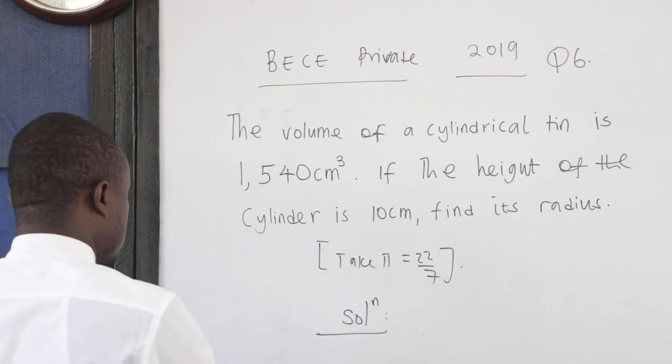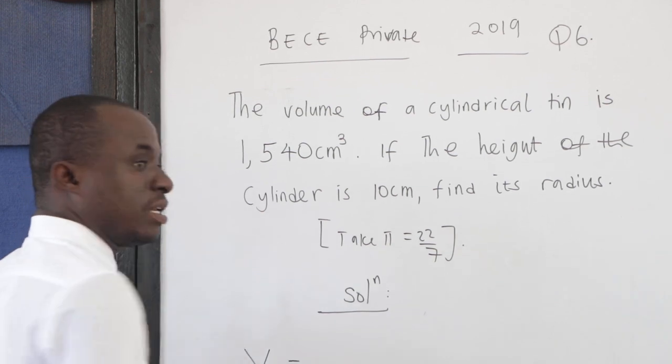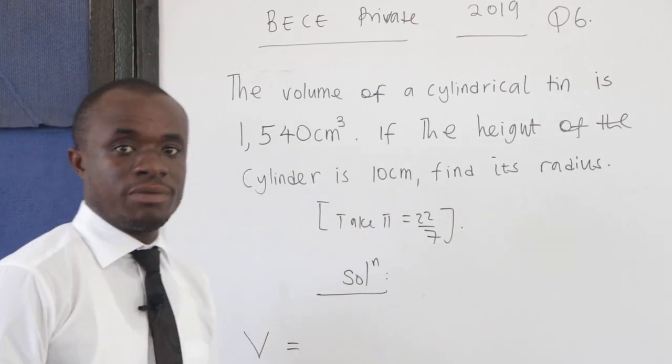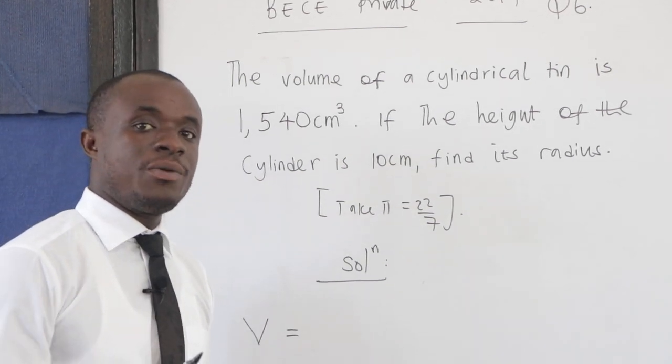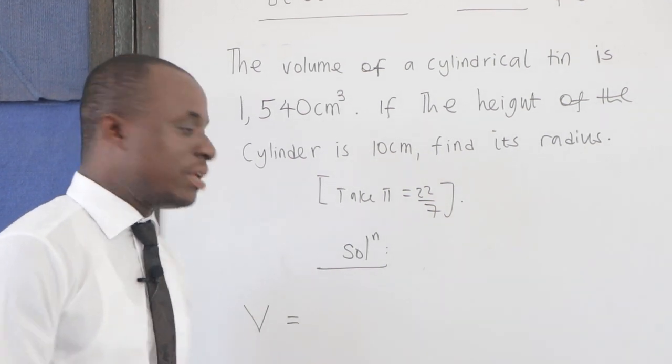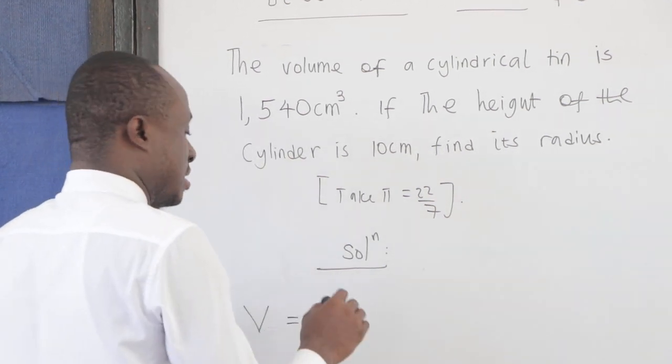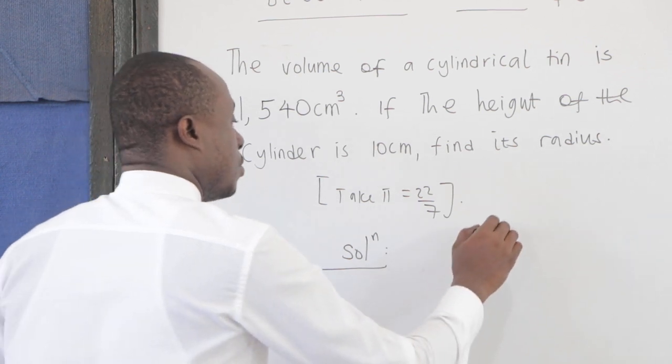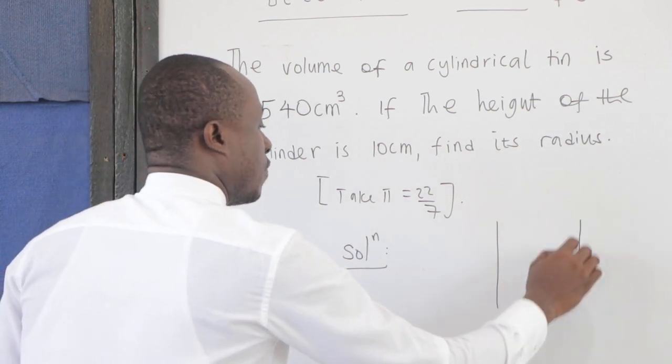Now, what is the volume of a cylinder? The volume of a cylinder is given by the base area times either the height or the length. So the base area is a circle.